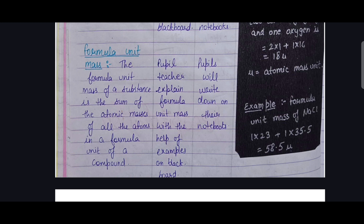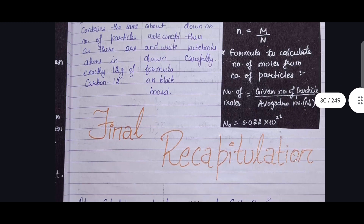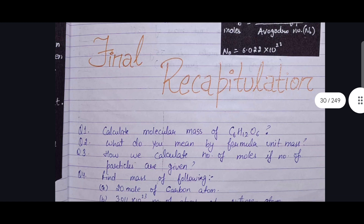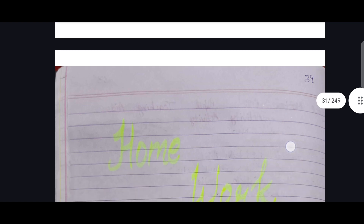Next is the mole concept and its definition: the mole is the amount of substance that contains the same number of particles as there are atoms in exactly 12 grams of carbon-12. Then blackboard work is used. Final recapitulation questions include: calculate the molecular mass of C₆H₁₂O₆; what do you mean by formula unit mass; how do we calculate the number of molecules when the number of particles is given; find the mass of 20 mol of carbon atom; and for 3.011 × 10²³ atoms of nitrogen.